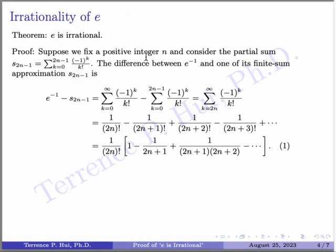What happens if you stop somewhere in between and not go all the way to infinity? Consider the partial sum S of 2N minus 1: starting at K equals 0 and ending at the odd index 2N minus 1. Because you stop at 2N minus 1, the remainder series starts at 2N. Notice the alternating sign: minus 1 to the K. When K starts at 2N — which is even — minus 1 raised to an even number is positive 1. So this remainder starts with a positive term.